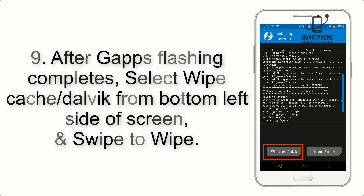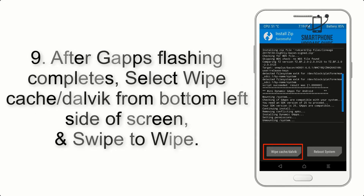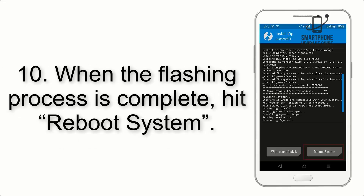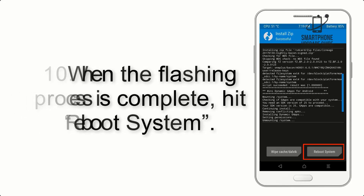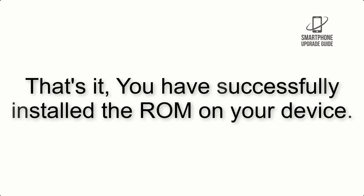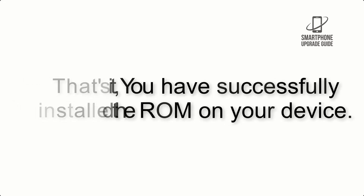Step 9: After GApps flashing completes, select Wipe Cache and Dalvik from the bottom left side of the screen and swipe to wipe. Step 10: When the flashing process is complete, hit Reboot System. That's it — you have successfully installed the ROM on your device.